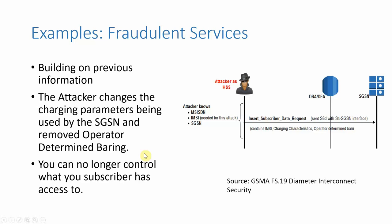For obtaining fraudulent services, spoof yourself as an HSS and send a fake Insert Subscriber Data Request to the SGSN — and remember, those previous messages give you SGSN addresses. By sending this, you can start giving yourself more services. Maybe you have a phone where you're not allowed to make premium rate calls — you can simply insert yourself additional services.